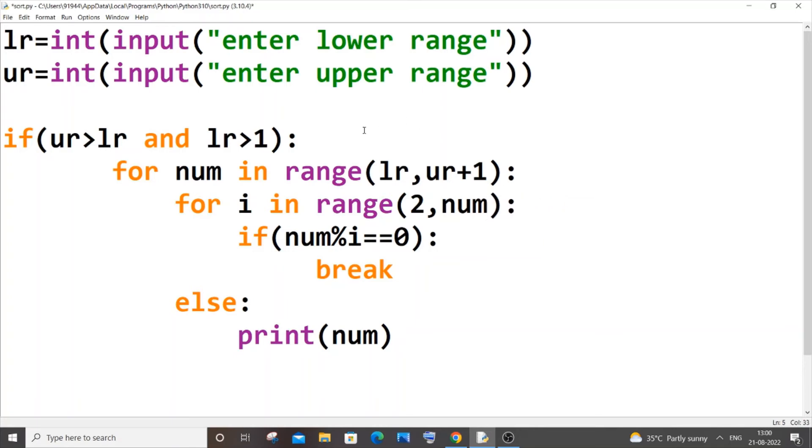Now let me explain how this code works. Our input value was 40 and upper range was 80. So what happens is that first these conditions will be getting checked. 80 is greater than 40, so this is true, and 40 is greater than one, so this is also true. Then it goes inside this. Our num iterates between 40 and 80. So at the first time num will be equal to 40 and will go here.